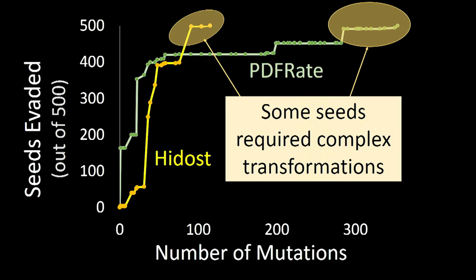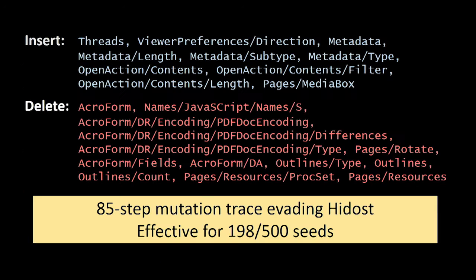For other samples, large numbers of transformations were needed — over 300 mutations to find an evasive variant for a particular seed — involving both inserting and deleting nodes in the PDF files.